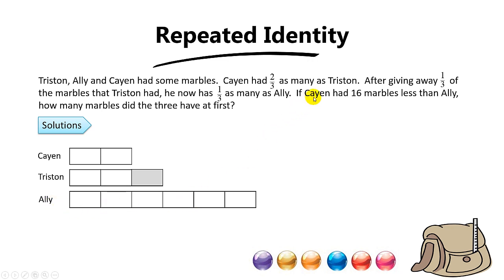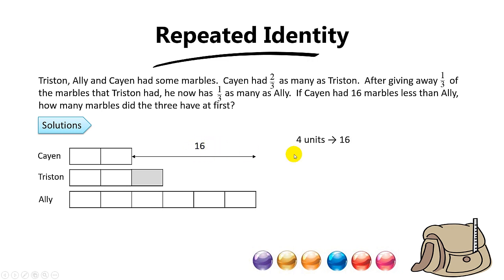The question says Cayenne had 16 marbles less than Ellie. That means the difference between Cayenne and Ellie, which is four units, equals 16. So four units equal 16, and one unit equals 16 divided by 4, which is 4.